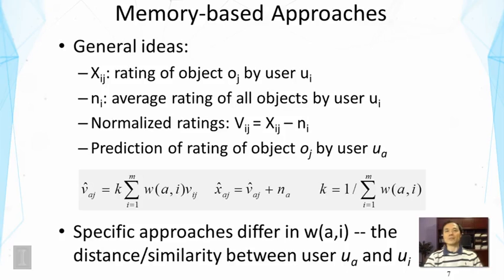Here's the general idea with some notations. X sub ij denotes the rating of object oj by user ui, and n sub i is the average rating of all objects by this user. This n_i is needed because we want to normalize the ratings of objects by this user.